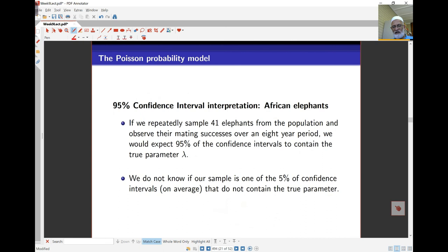The same interpretation as before, the sample size is 41. So if we repeated the sample of 41 elephants over a period of 8 years, we expect 95% of the confidence intervals likely to result from that, to contain the true parameter lambda. Hypothesis testing in the usual way, and I'll come back to that in the next lecture. Thank you. Bye.